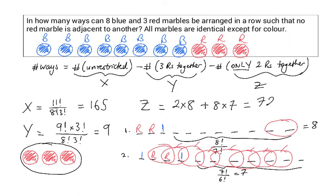Finally, substituting the values for x, y, and z, we get 84 for the total number of different ways that the 8 blue and 3 red marbles can be arranged in a row, such that none of the red marbles are adjacent to one another.